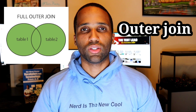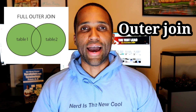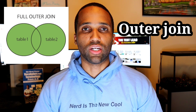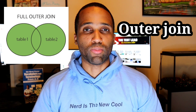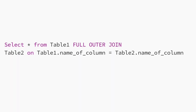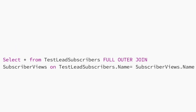And our last join statement, the SQL outer join. Outer join allows you to return data from both tables if there are any matches at all. The command looks like this: select star from table one full outer join table two on table one dot name of column equals table two dot name of column. Our example is: select star from test lead subscribers full outer join subscriber views on test lead subscribers dot name equals subscriber views dot name. This will return all records from both tables as long as there is a match.